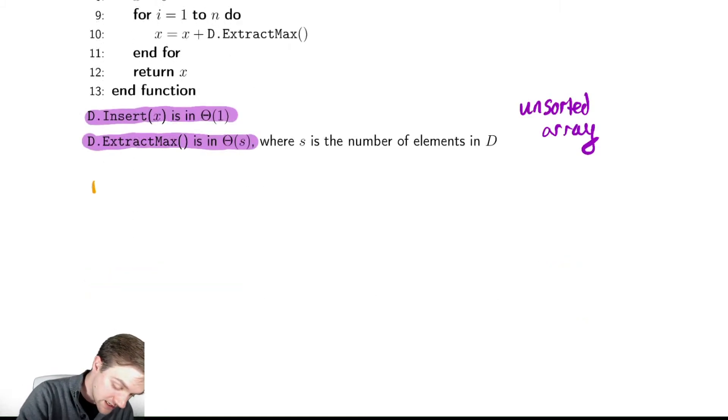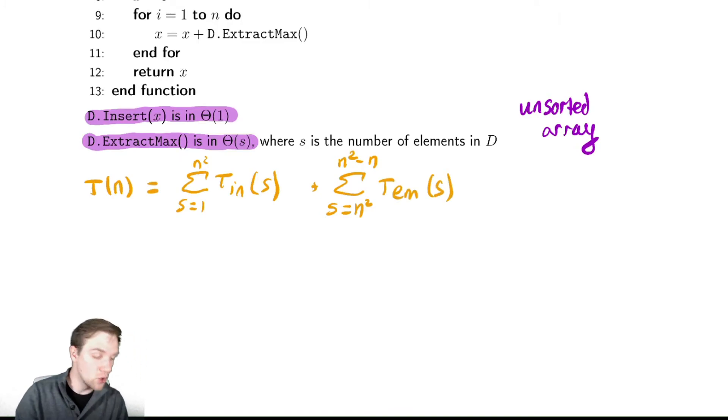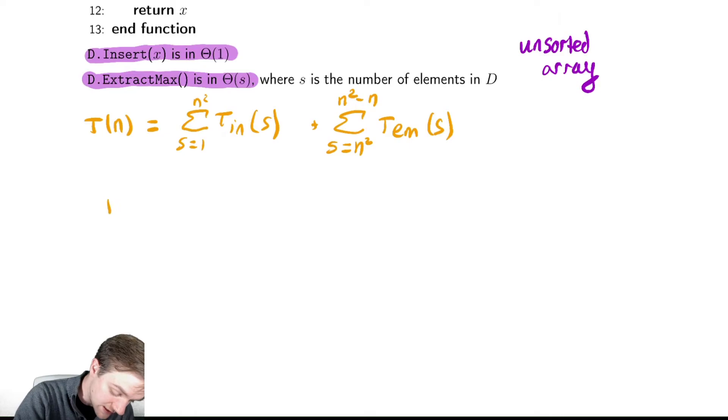I know I can write the runtime, T(n), as the sum from s equals 1 to n squared of the time it takes to insert as a function of s plus the sum from s equals n squared down to n squared minus n of the time it takes to extract the maximum as a function of s. Normally I would need to recompute those sizes, but this is identical function, so I already knew those sizes from before. And I know those runtimes for those methods. They were given to me as part of the problem.